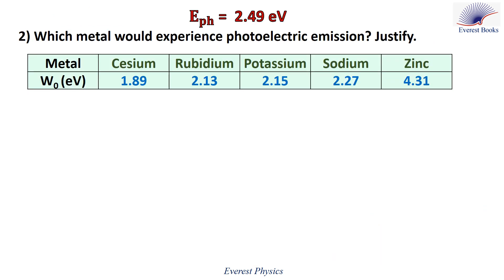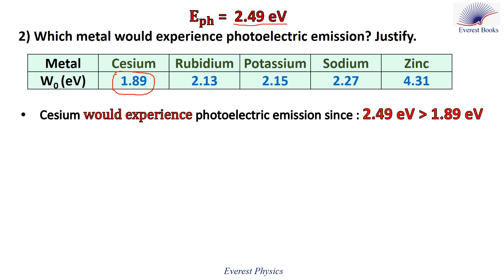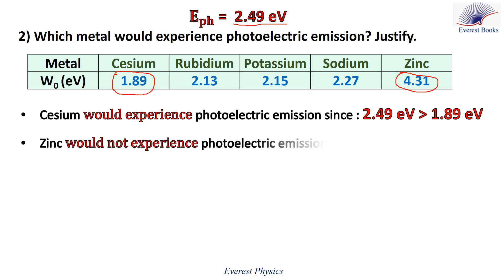Which metal among cesium and zinc would experience photoelectric emission? The work function of cesium is 1.89 electron volts, which is less than the energy of one photon (2.49 eV), so cesium would experience photoelectric emission. The work function of zinc is 4.31 electron volts, which is greater than the energy of one photon, so zinc would not experience photoelectric emission.